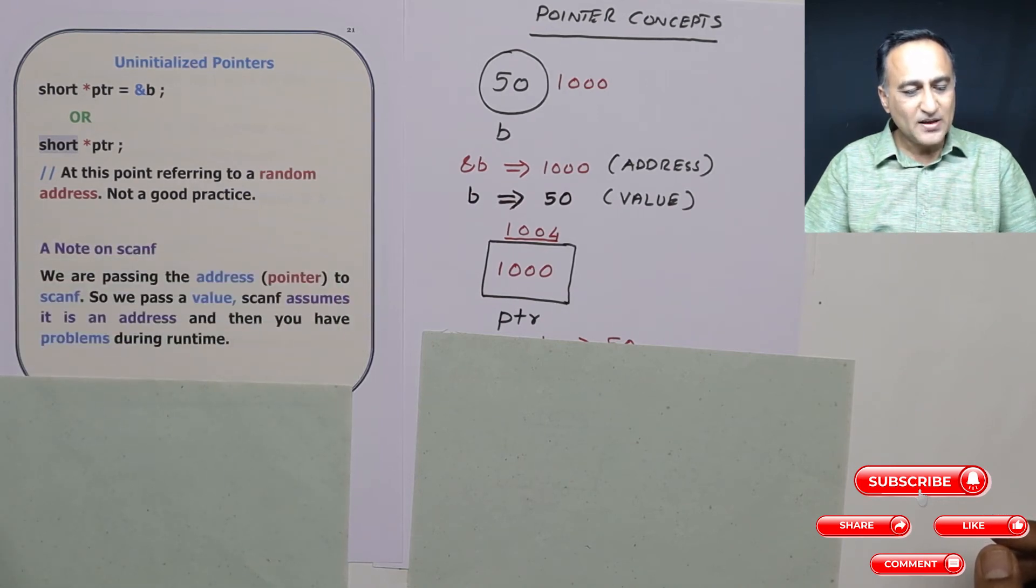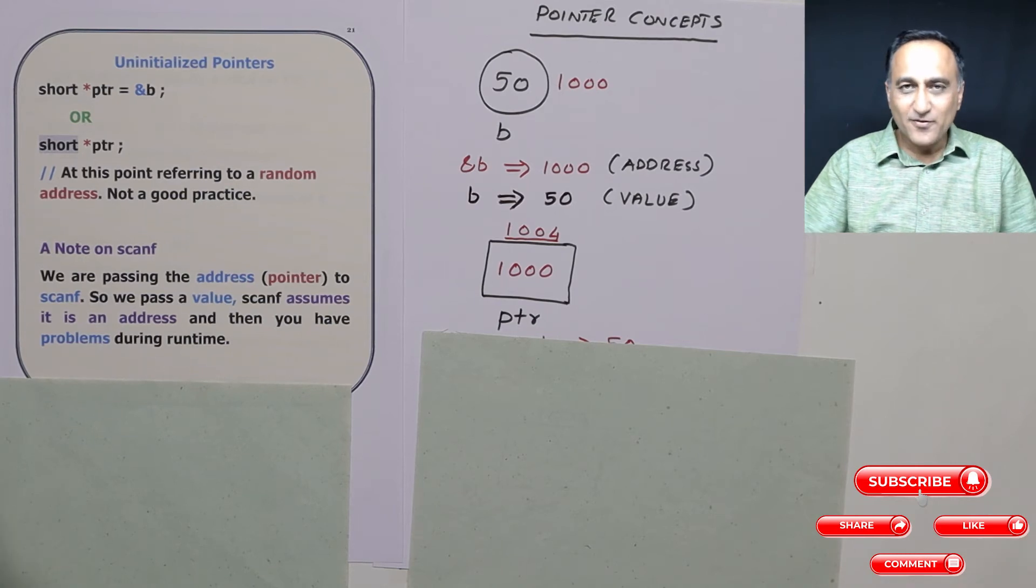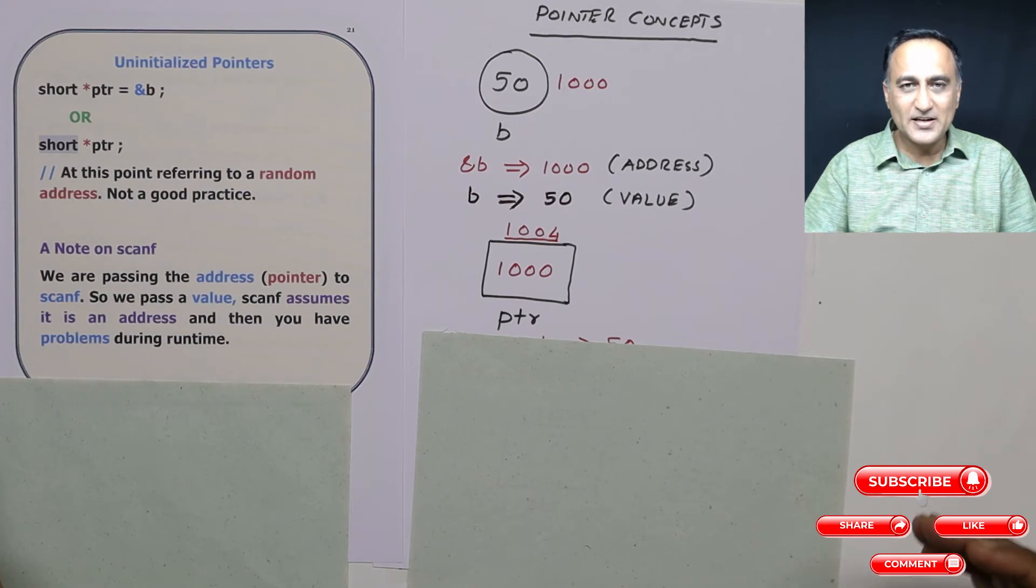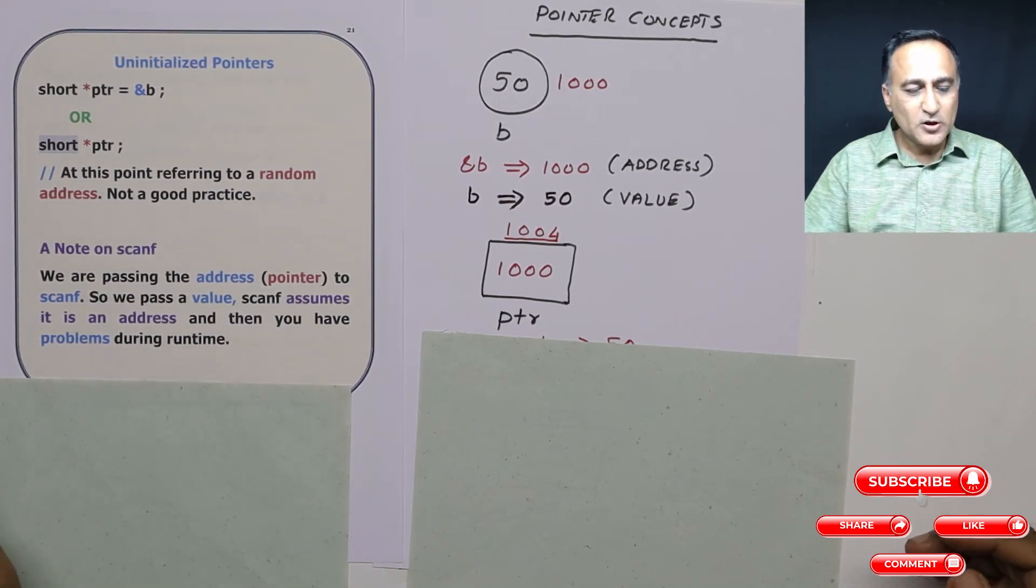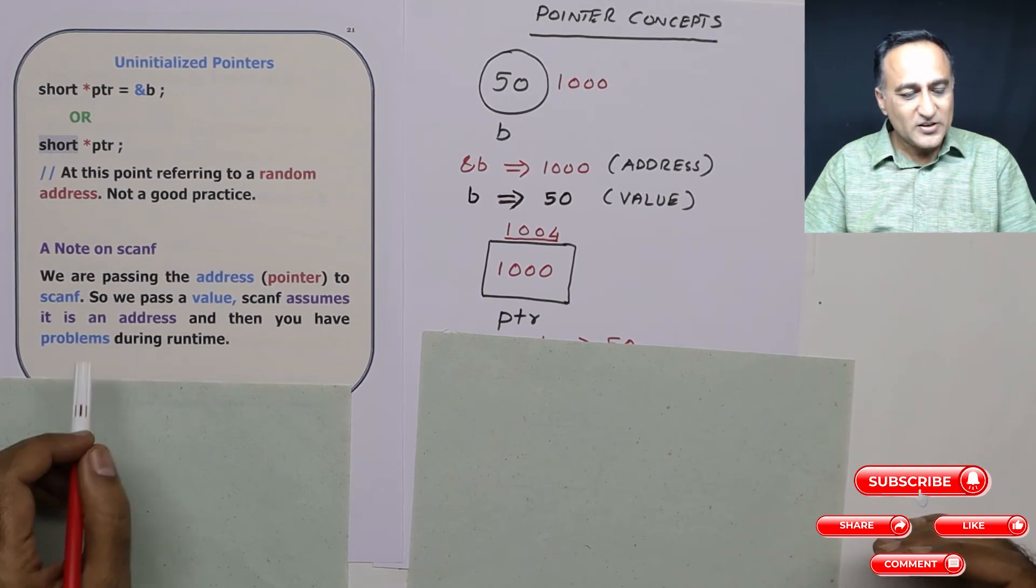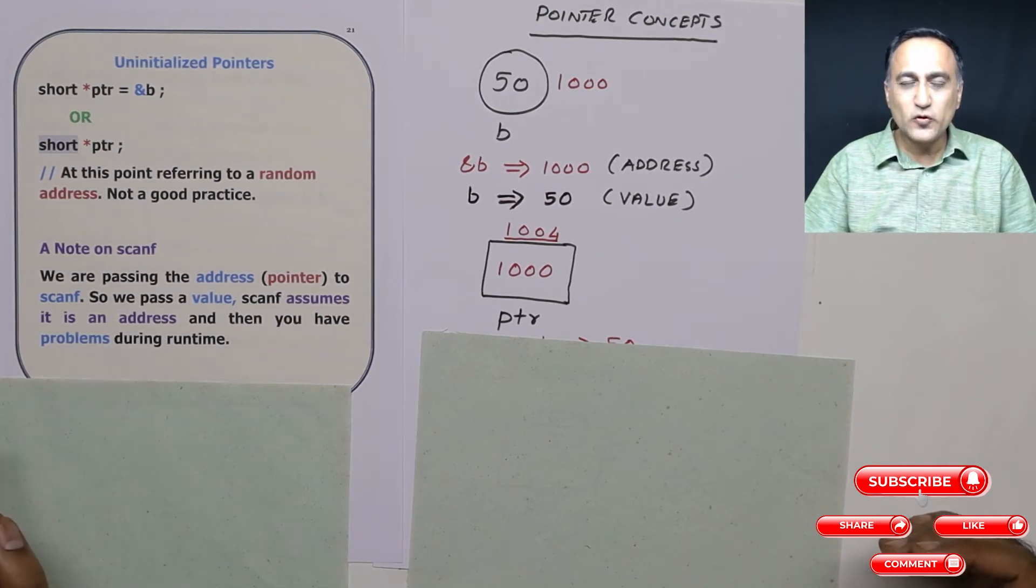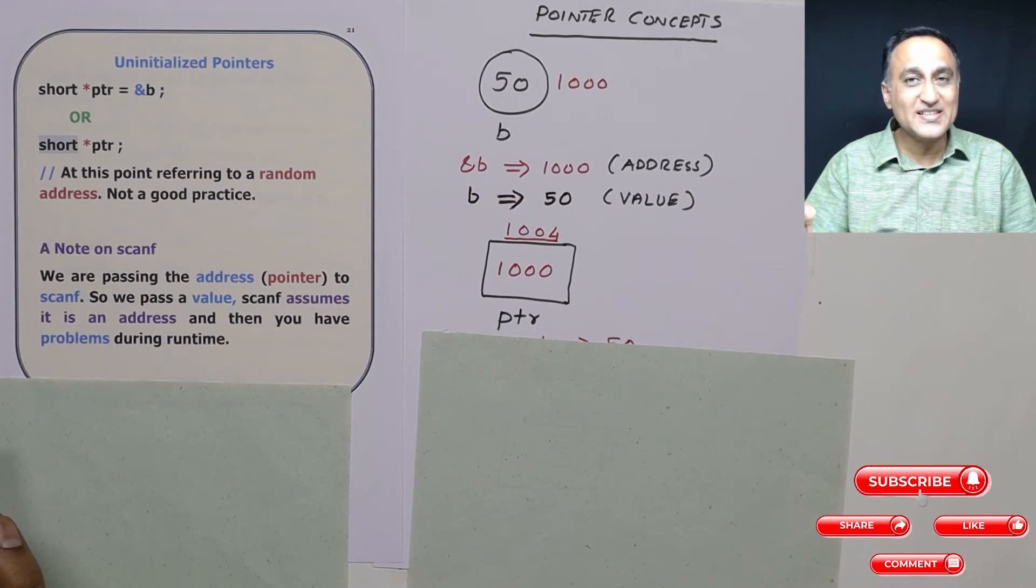Now one note on scanf. If you look at scanf we are passing address of b, we are passing address of the variable. Address means pointer. So any number we pass to scanf it assumes that it is an address. So even if you pass an integer number it assumes it to be an address. That's why scanf doesn't warn you when you do not use the address operator because it thinks that is a number and that number is an address, but when you are executing the program, the program may not behave per expectations or may also crash.